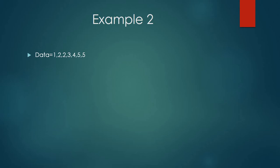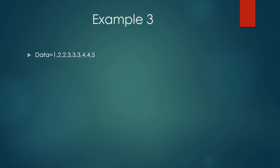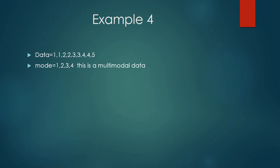In the next example, we have data with two modes: two and five, because they both appear twice while all other elements appear only once. The mode will be two and five, and this kind of data is called bimodal data. In another example, we have elements with frequencies of one and two for some values, and three appears three times, so the mode will be three.